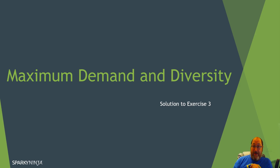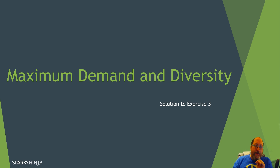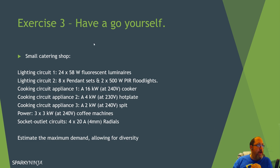A quick re-record after some clever people realised the very first calculation was wrong in the previous upload. So let's try this again. Here is the solution to exercise 3, hopefully. This follows the episode 6 video where we looked at best in demand and diversity, and we're going to do this third scenario of a small catering shop.